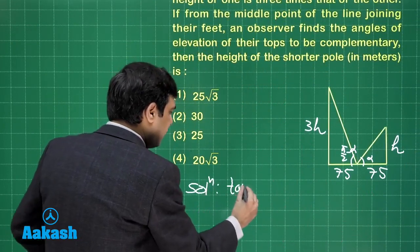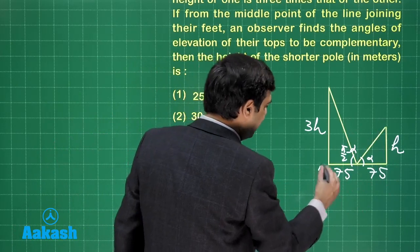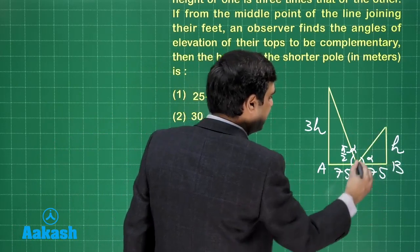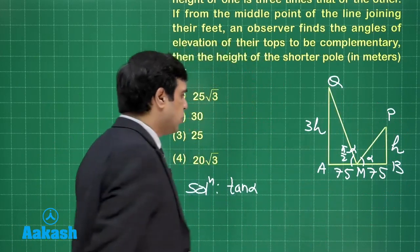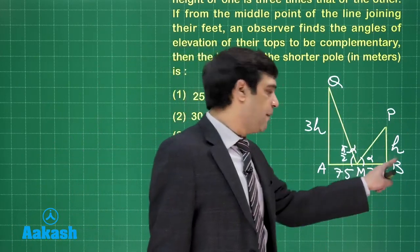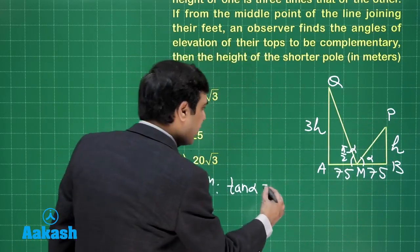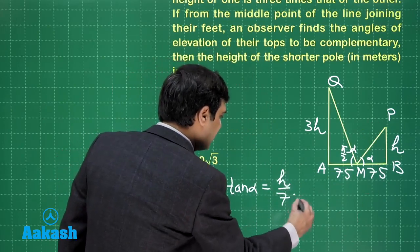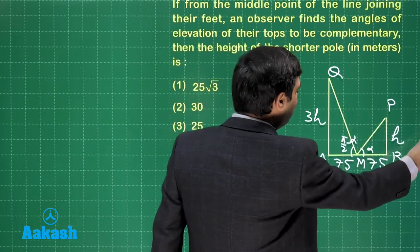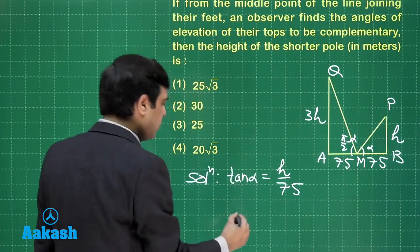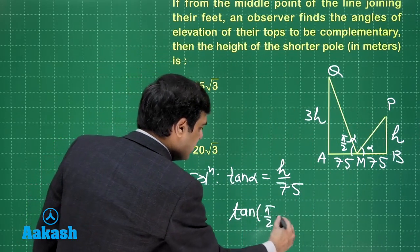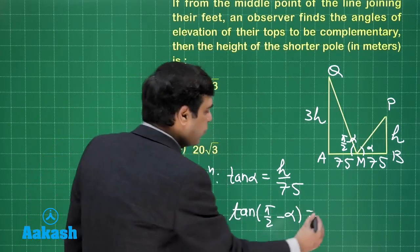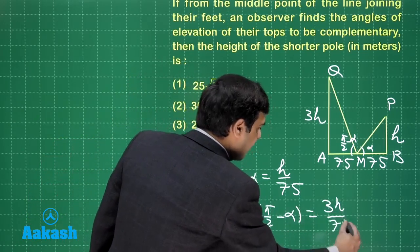Tan alpha, if I look in this triangle - I can also mark like A, B, M, P, Q. So if I look in the triangle PMB, I will say tan alpha is equal to h by 75. And from the other triangle, that is AMQ, I will say tan 90 minus alpha is equal to 3h by 75.